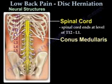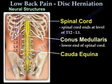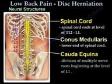The conus medullaris is the end of the spinal cord. The cauda equina, which is a collection of nerve roots, usually begins at the level of L1.